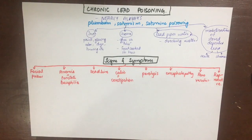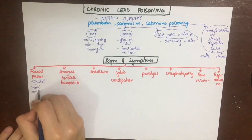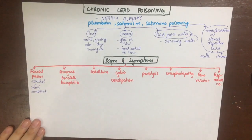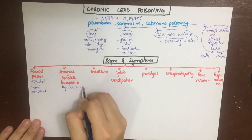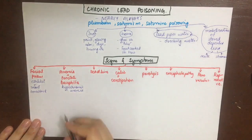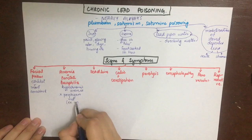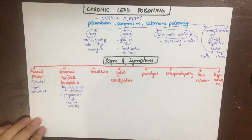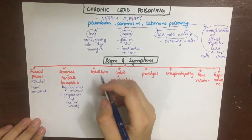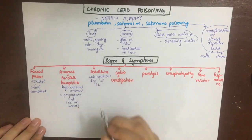The pale face is the earliest and most consistent sign; it is due to vasospasm of vessels of the face. The blood smear will also show hypochromic anemia with punctate basophilia, which means the presence of basophilic granules in the RBC cytoplasm, because lead interferes with porphyrin metabolism.